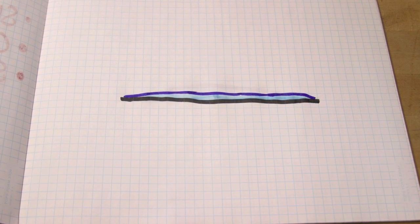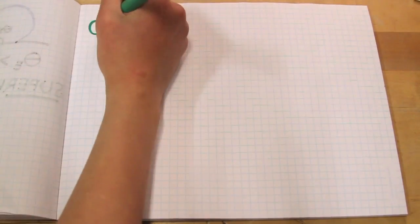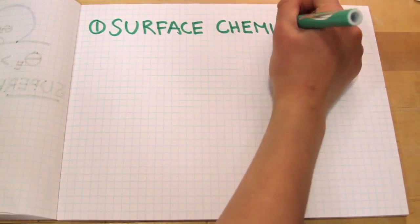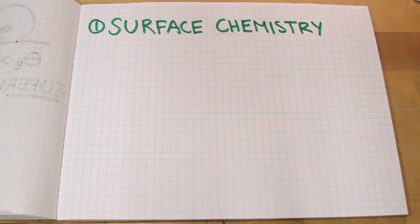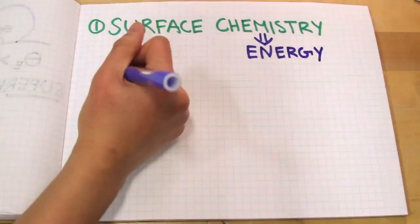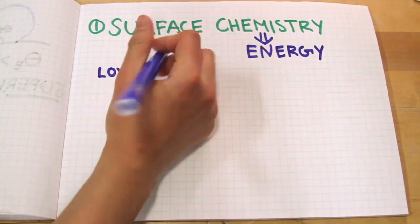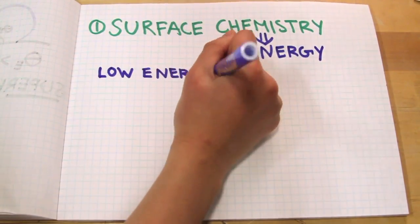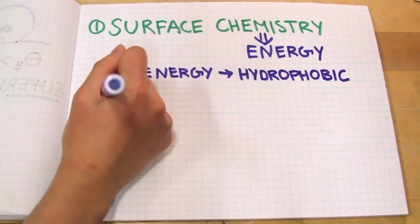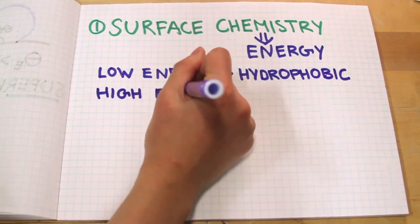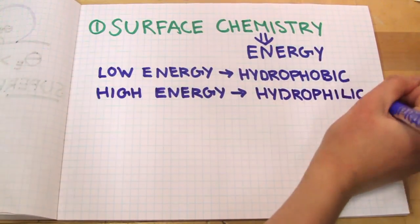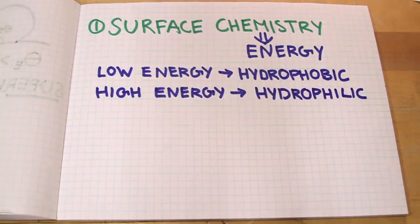So what makes a surface superhydrophobic or superhydrophilic? There are two main factors. The first is surface chemistry, which determines whether the surface has low or high surface energy, and therefore whether it is hydrophobic or hydrophilic. Generally, surfaces with low surface energies are hydrophobic, and surfaces with high energies are hydrophilic. Things such as Teflon and other plastics have low energy, while metals have high energies.